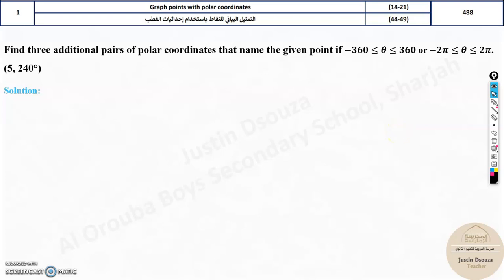Welcome to the first topic of the exam scheme. Here they have asked us to find the multiple representation of a polar coordinate. They have asked us to find three additional pairs of polar coordinates that name the given point from negative 360 to positive 360 or negative 2π to positive 2π at this particular point (5,240°). It may seem complicated but it's very easy.